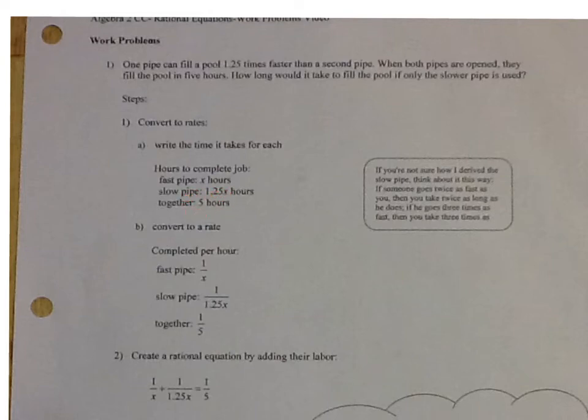So we're going to convert now. Because I want to know how much the job gets done per hour. So I take the fast pipe, which is X, and I write it as 1 over X. So that's 1 per hour. And then the slow pipe would be 1 over 1.25X hours. And together, it would be 1 over 5.